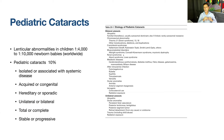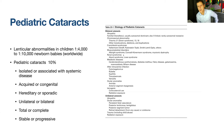Lenticular abnormalities in children have an incidence of about 1 in 4,000 to 1 in 10,000 newborn babies worldwide, and pediatric cataracts comprise about 10% of those patients. Pediatric cataracts can be isolated or associated with systemic disease, acquired or congenital, hereditary or sporadic, unilateral or bilateral, total or complete, stable or progressive, and there are various etiologies.